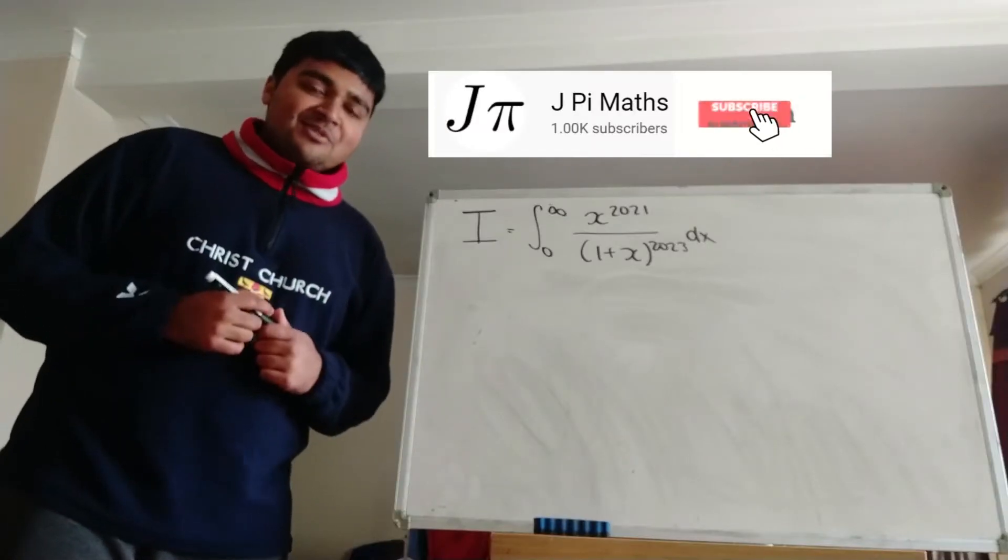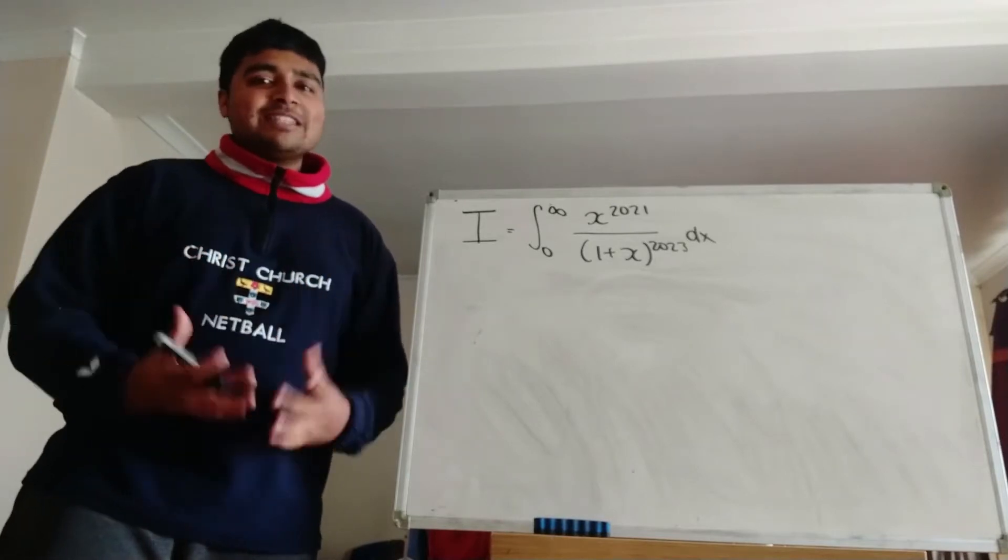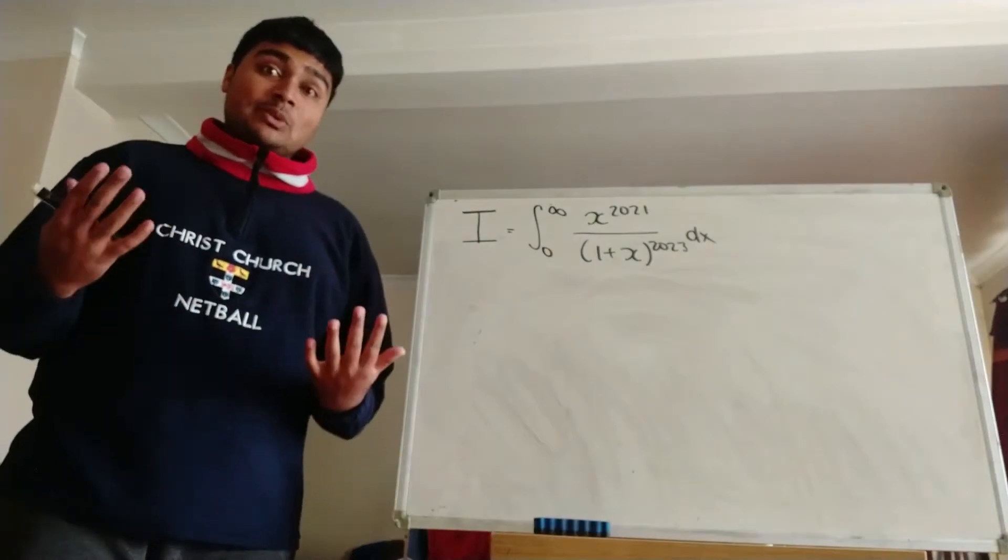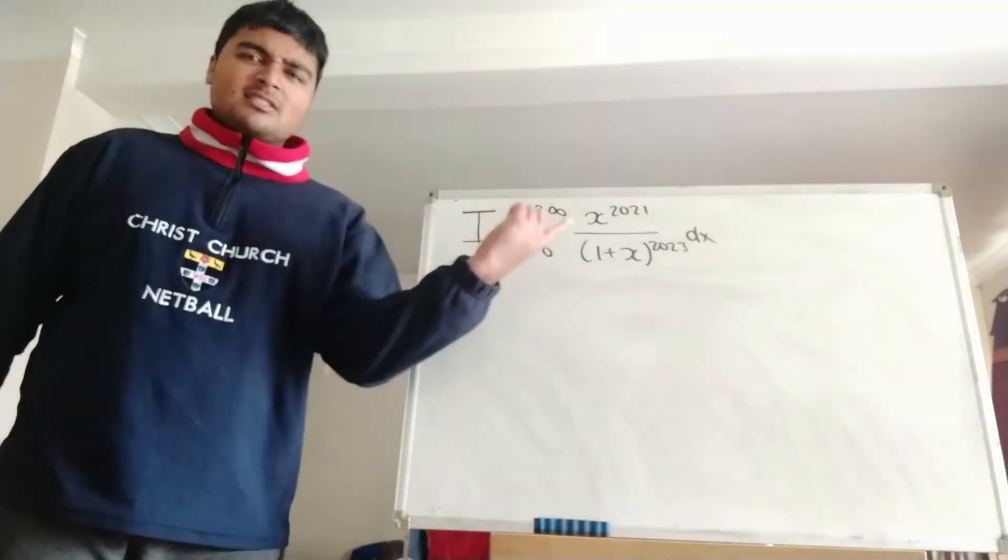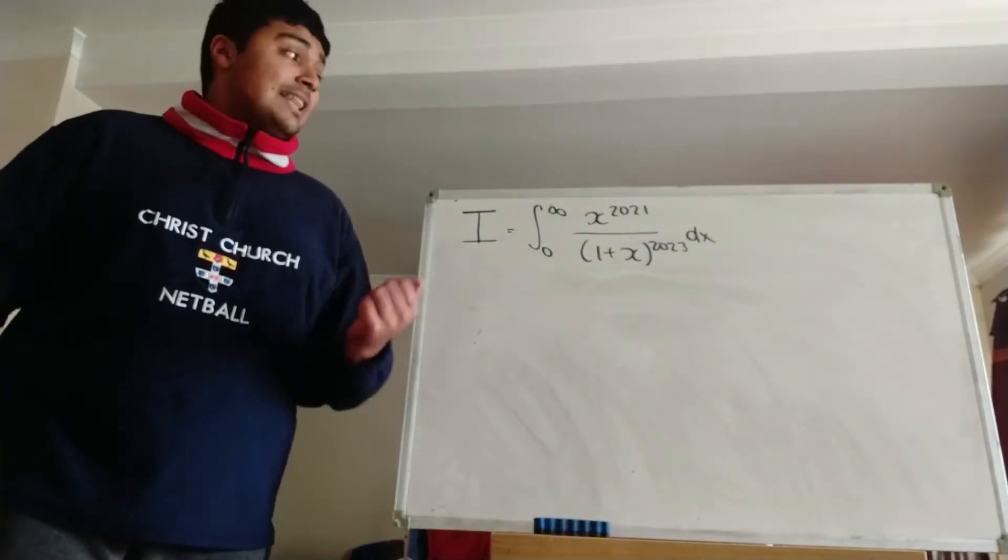Okay, so there are actually a few different ways we can evaluate this integral, but the way I'm going to be showing you is hopefully the most intuitive if you were to have a go at it yourself. So first you can notice that our denominator is to the 2023 and our numerator is to the 2021. But of course we can write our denominator as to the 2021 times 1 plus x squared. So that's exactly what we're going to do.